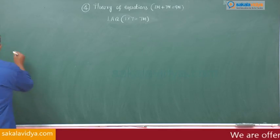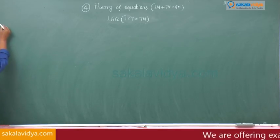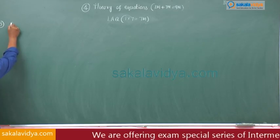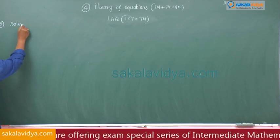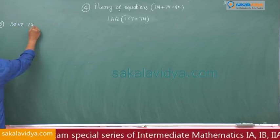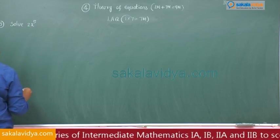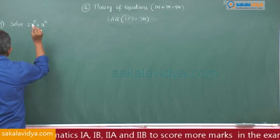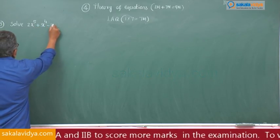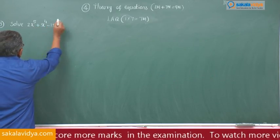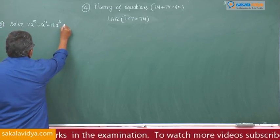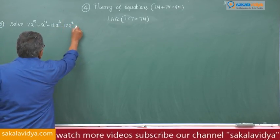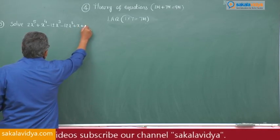Third question: solve 2x to the power of 5 plus x to the power of 4 minus 12x cubed minus 12x squared plus x plus 2 is equal to 0.